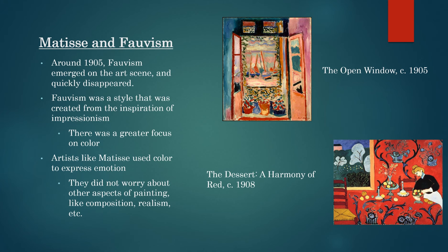If you look to your right, there are other works by Matisse such as The Open Window and The Dessert that both show examples of this. The goal for Fauves was to depict the emotion of the artists and their environment around them.